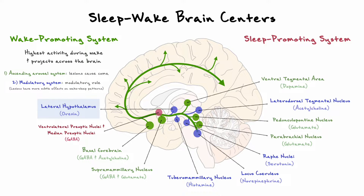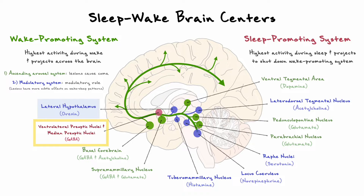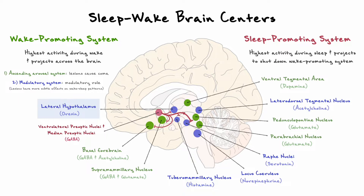To put it simply, the regions part of the ascending arousal system are very important to keep the entire organism awake, and any lesions in the system — especially in the pedunculopontine or parabrachial nucleus — can result in a coma, or essentially the loss of consciousness. On the other hand, the modulatory system is much more complex as it contributes to wakefulness in more indirect ways, and lesions in these areas typically have more subtle effects on sleep-wake patterns. When it comes to the sleep-promoting system, there are a few areas like the ventrolateral preoptic nuclei and the median preoptic nuclei that have their highest levels of activity during sleep and they have local projections that act to shut down the wake-promoting system by releasing inhibitory neurotransmitters.